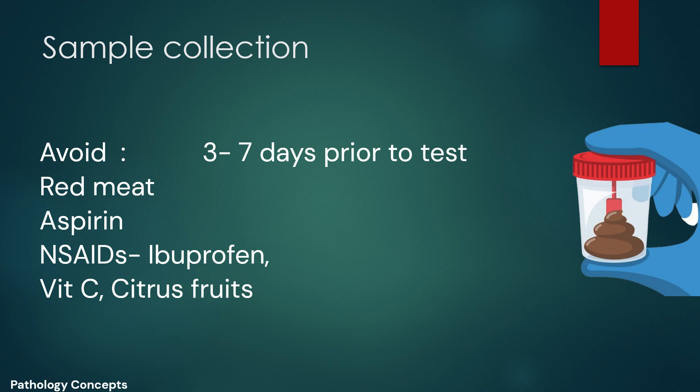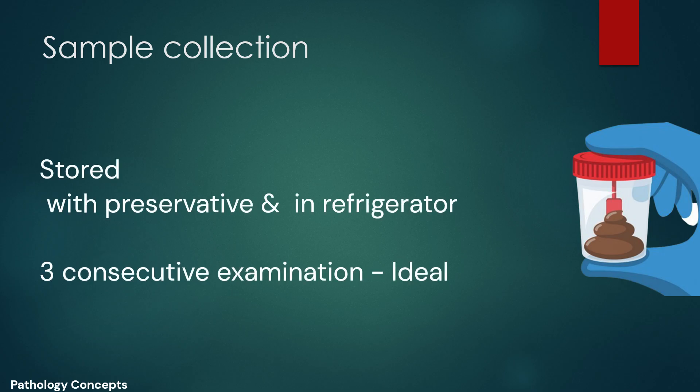The patient should avoid red meat for three days and should not take aspirin or NSAIDs such as ibuprofen for seven days prior to the test. Vitamin C more than 250 mg per day from supplements, citrus fruits, or citrus juices should be avoided for three to seven days before testing, as it can make the result falsely negative even if blood is present. If stool needs to be stored, it should be stored with preservative or in a refrigerator. Three consecutive stool sample examinations are ideal.